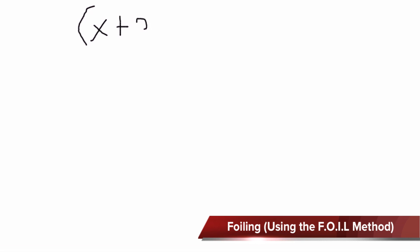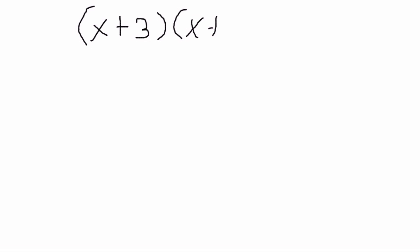Hello everyone, today we're going to practice foiling. Let's begin by having this expression x plus 3 and x plus 4. They're telling us that we have to multiply or simplify this expression. What we have to do is multiply the numbers that are inside the parentheses using a method called FOIL.